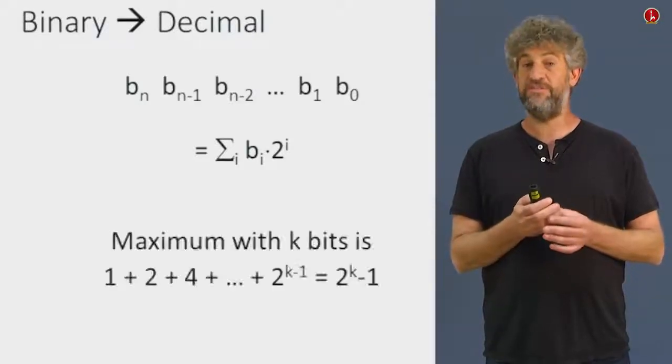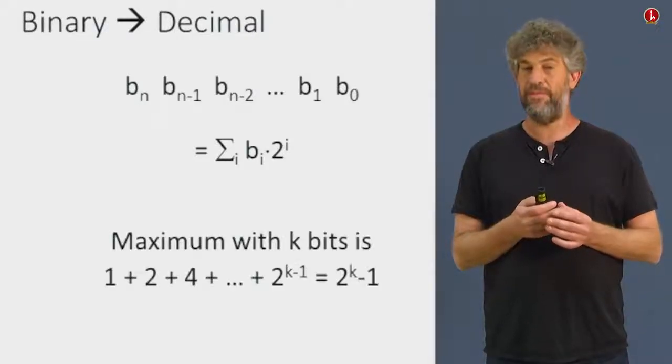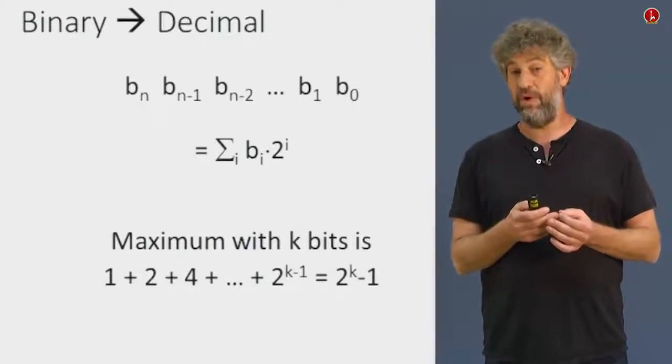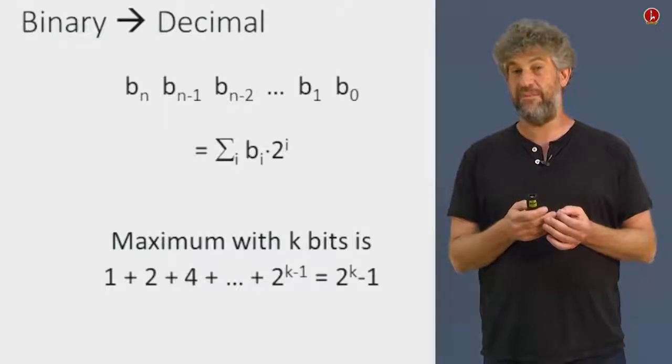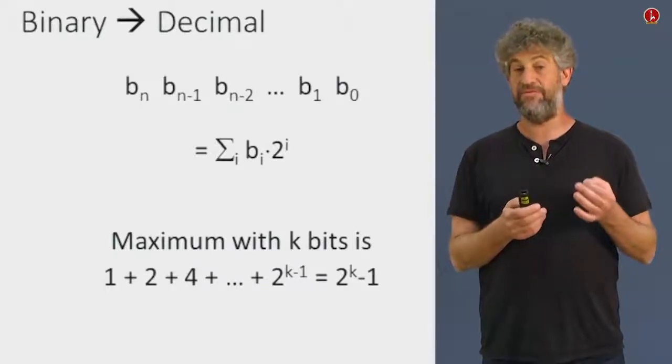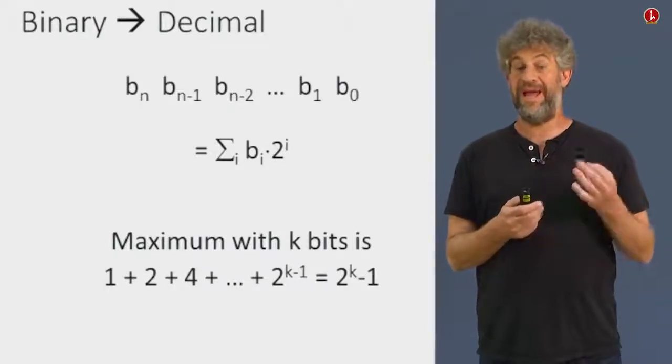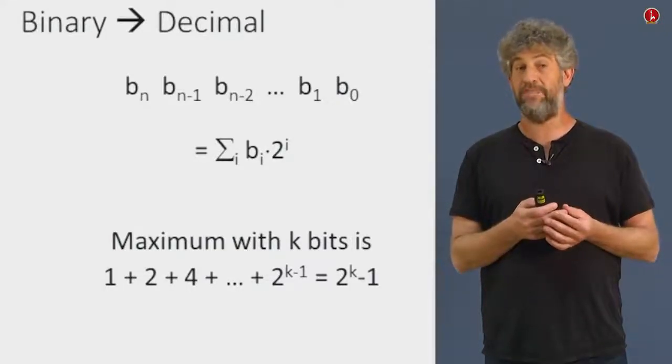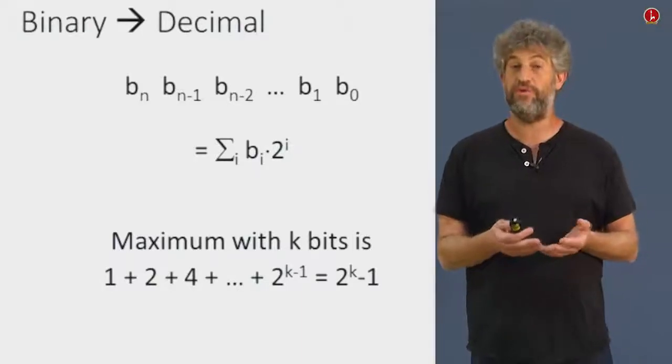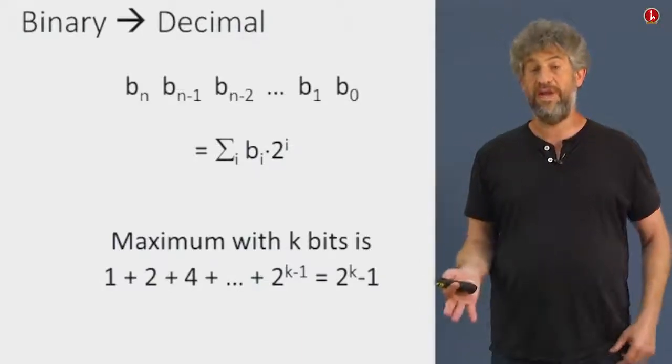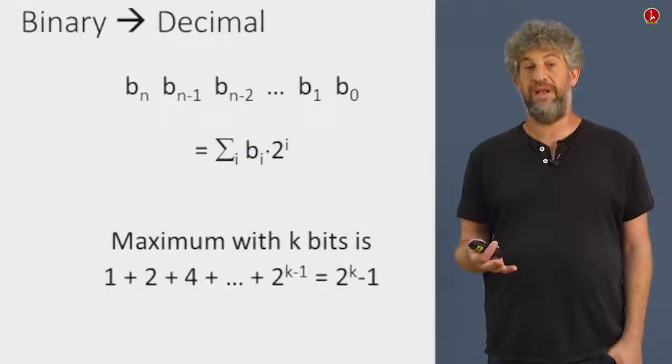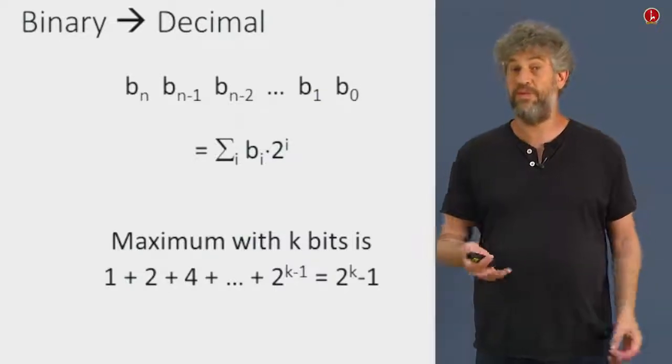One thing that we should note at this point, that if we look at the maximum number we can represent with k bits, well, we sum up from 2 to the 0, all the way to 2 to the k minus 1. Remember that the k-th bit, if we start counting from 0, the last bit is indexed k minus 1. So we have the sum of 1 plus 2 plus 4, all the way to 2 to the k minus 1. All together, we have 2 to the k, all that minus 1. And that's the range of numbers we can represent with k bits.